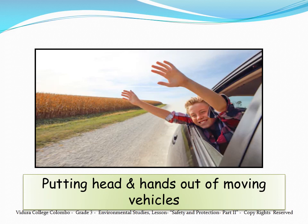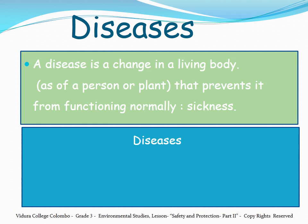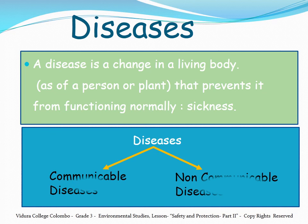Now we are going to learn about diseases. A disease is a change in a living body, such as in a person or plant, that prevents it from functioning normally. There are two types of diseases: communicable diseases and non-communicable diseases.